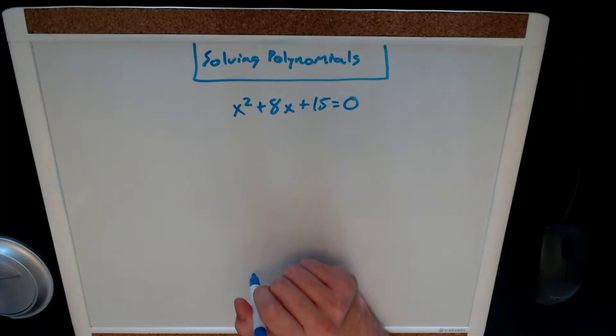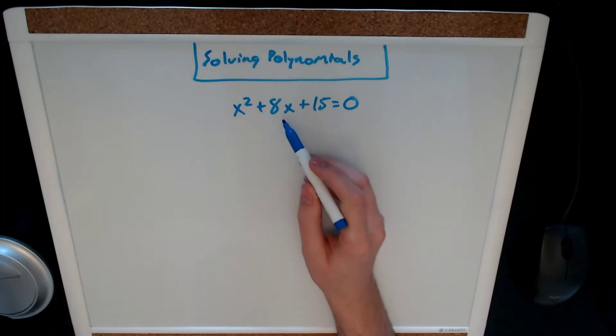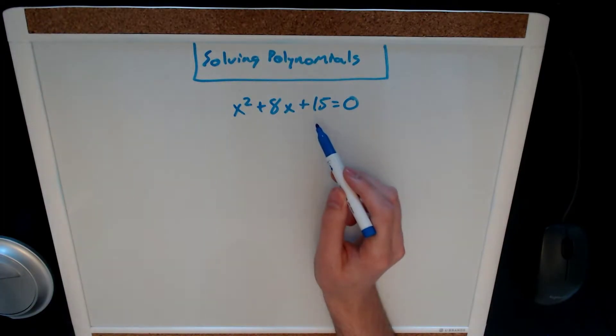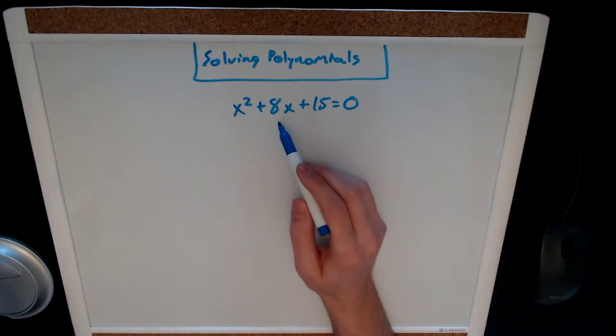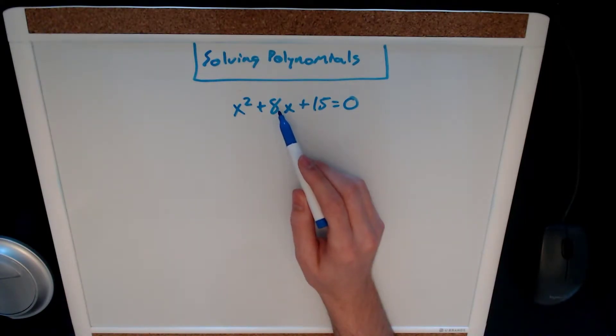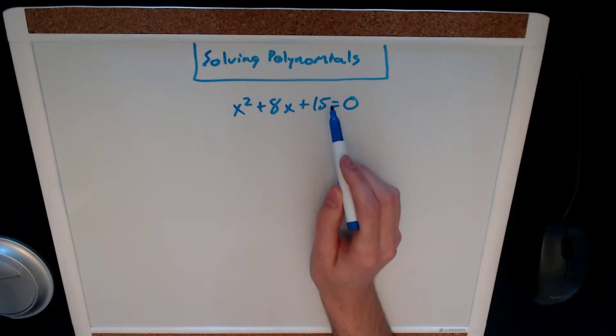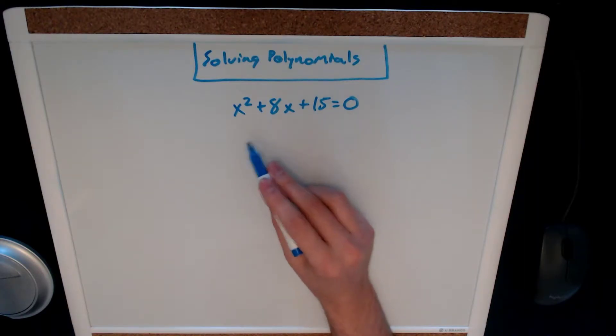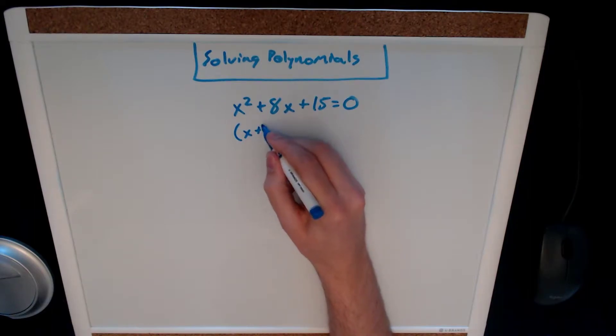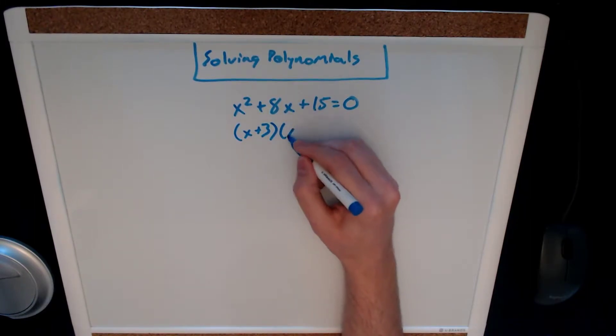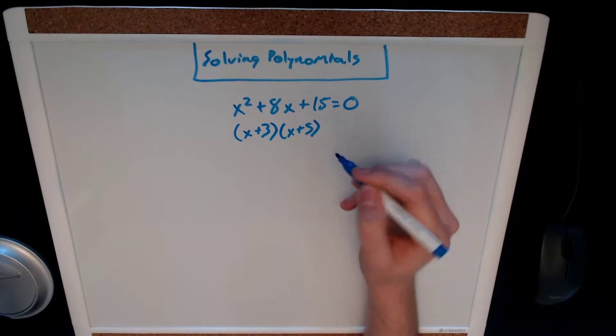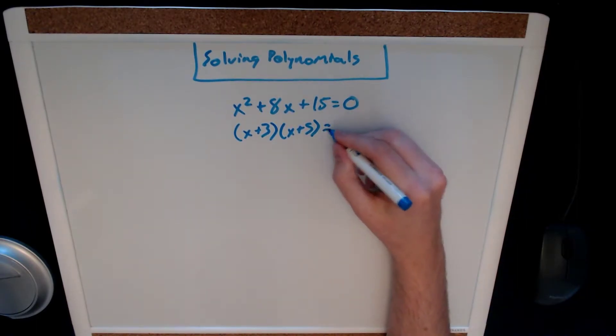In order to solve it this way we will be factoring, and the quickest way to factor is to figure out what two numbers add up to our b value and multiply out to our c value. I can tell you that these two numbers for this case are three and five. So we will have x plus three and x plus five, and we'll set that equal to zero.